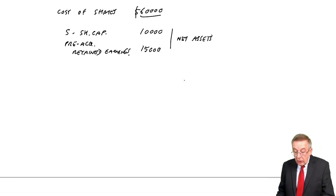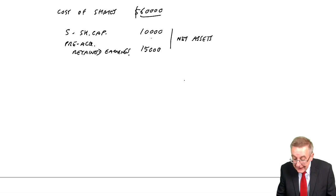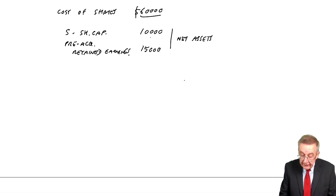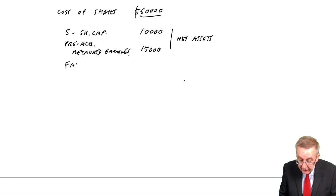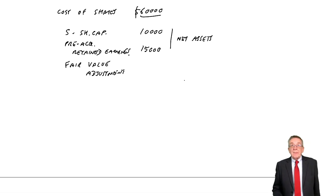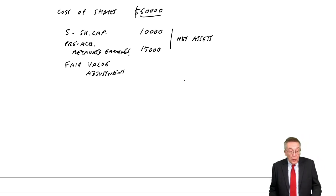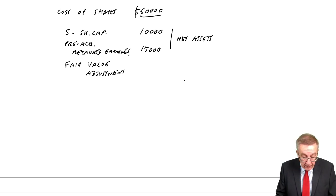So we're buying the net assets, which the carrying value in total would be £25,000, but we add what we call a fair value adjustment. At the day we bought it, we decided the assets were worth £9,000 more than S was showing, so we pay £9,000 more.